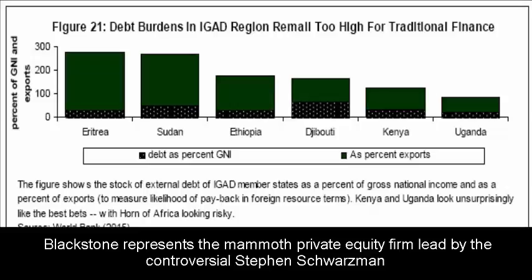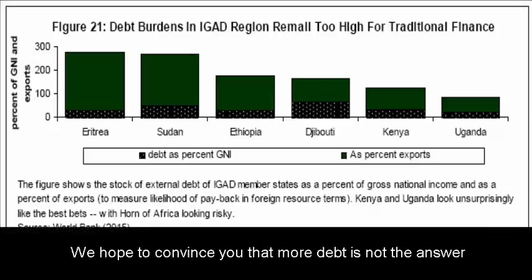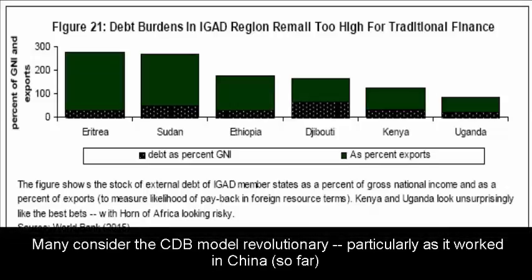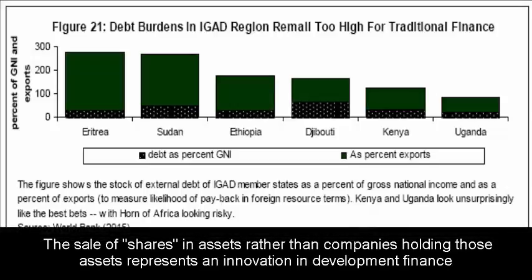Specifically, these next-generation development banks need to focus much more on equity, private equity, or the public offering of equity, rather than traditional debt-based financing and putting economies like the IGAD economies under increasing amounts of debt. The theme for this group of figures focuses on the China Development Bank model as slightly tweaked for the IGAD region. These six figures argue against the debt-based approach and more for the sale of securitized assets which are then sold to the public, as we describe in our paper.